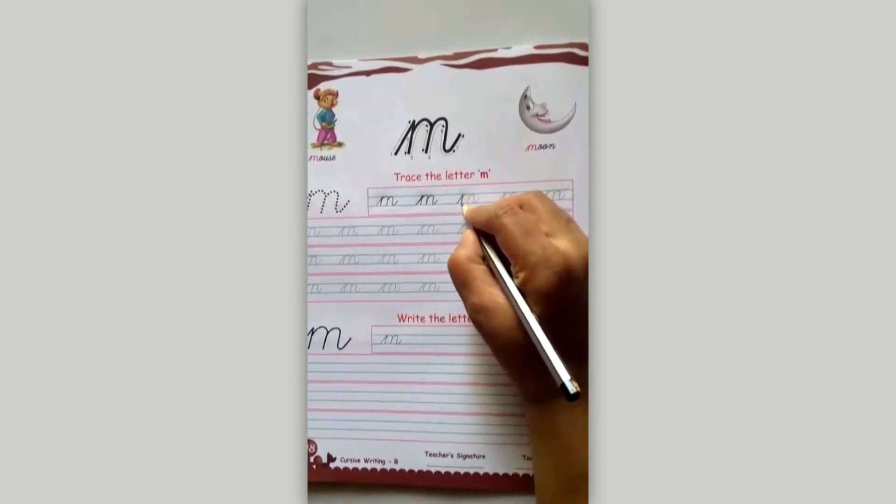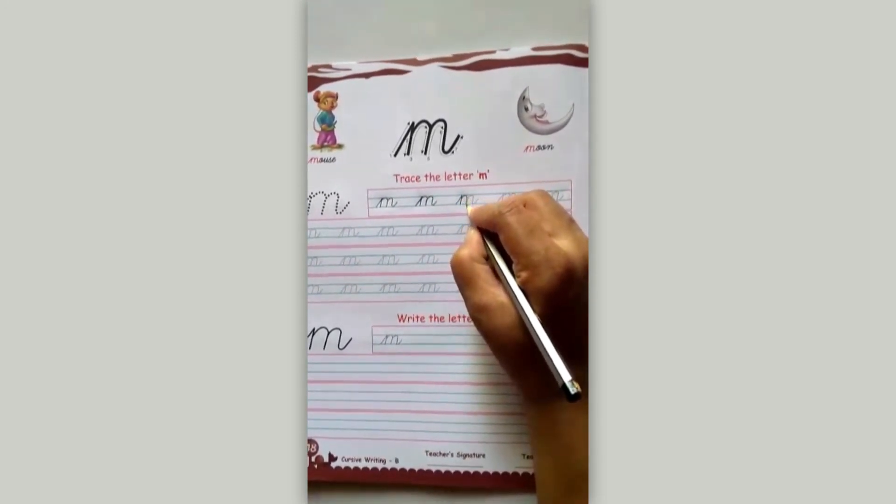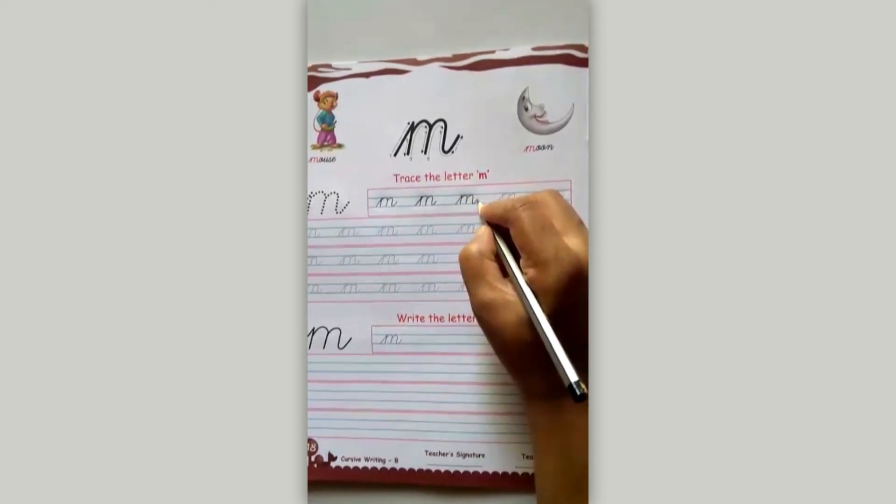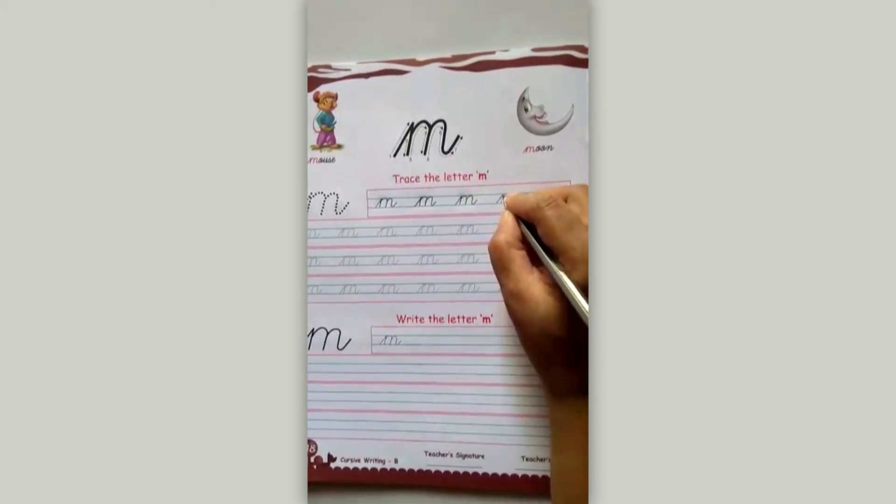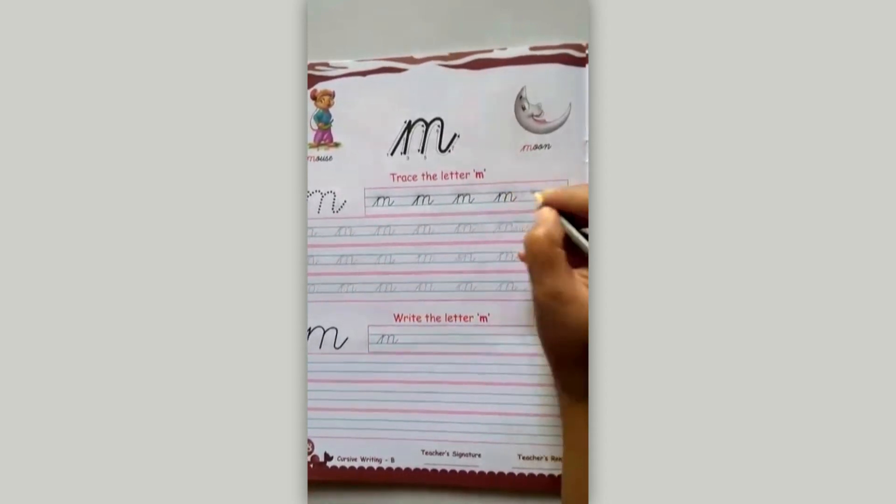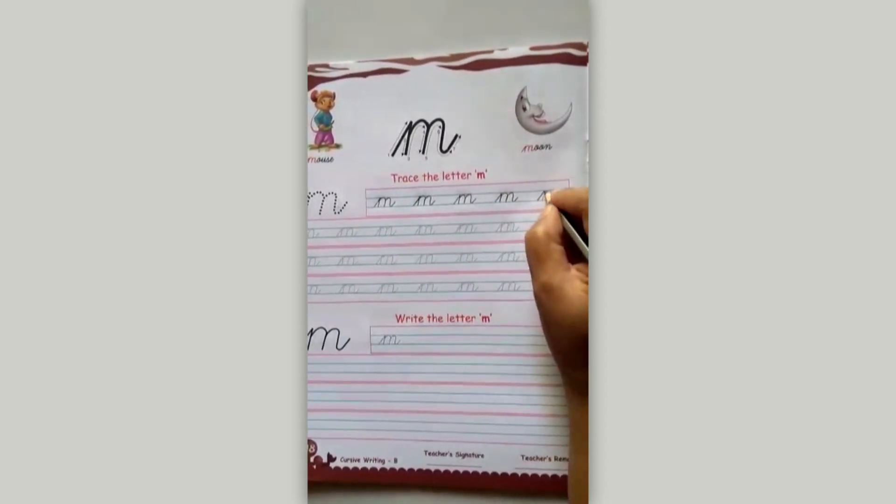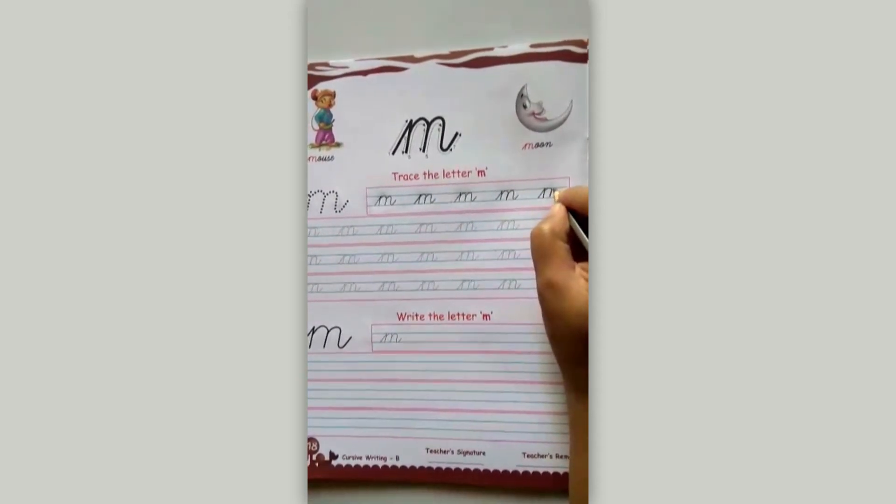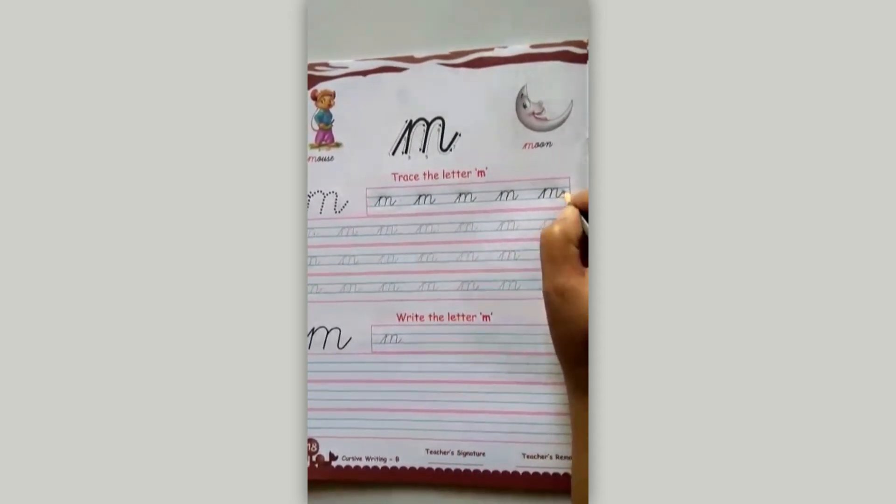So this is our small cursive M. Okay? It's very simple. Like this. And this. Again. This. And like this.